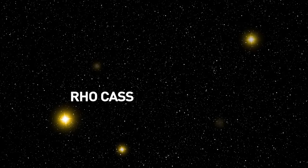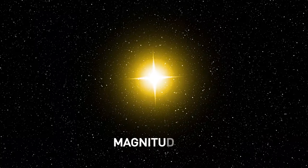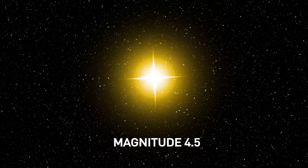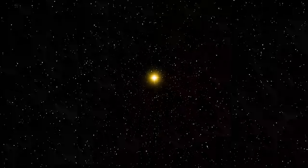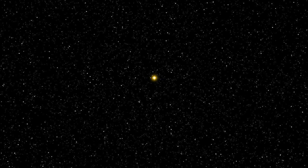Yet Rho Cass, a nickname, is only one of seven known yellow hypergiant stars in the Milky Way. It's another whopper. To be seen at magnitude 4.5, from a distance of about 10,000 light-years away, Rho Cass must be a very large star, a hypergiant.